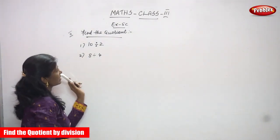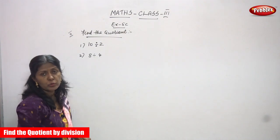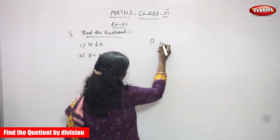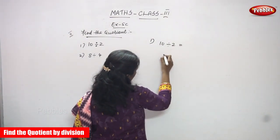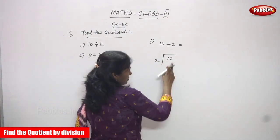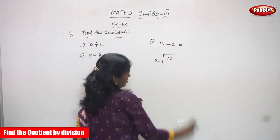Find the quotient. We are going to divide 10 by 2 and 8 by 4 using the division method. For the first sum, 10 is divided by 2. This is the dividend and the divisor. You must use the 2 times table.